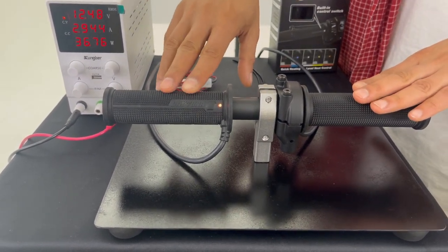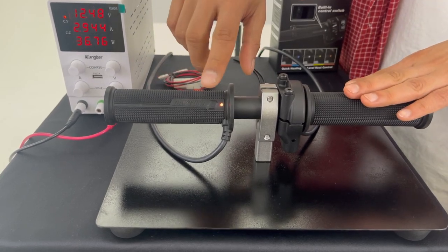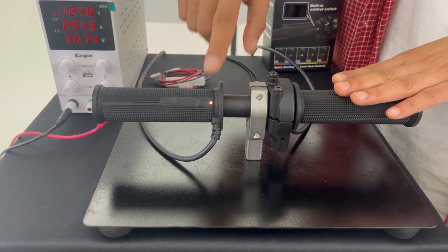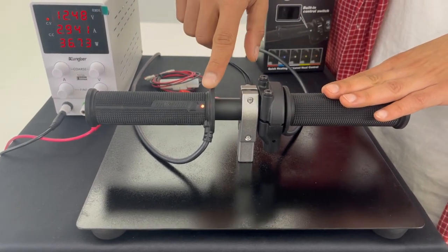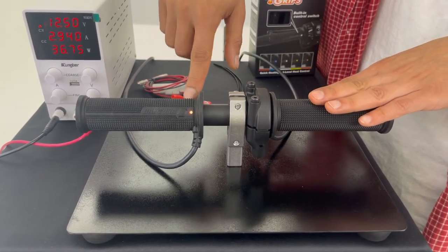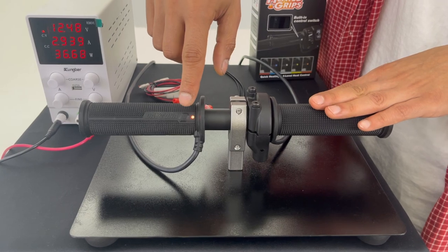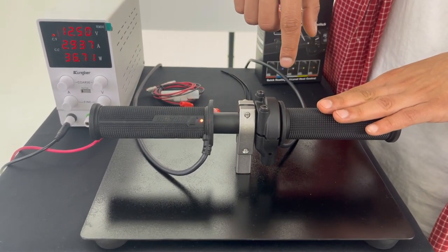And these grips also have a memory function as well. So they will remember the last level that you used and it will go back to that level. As you remember, before turning these off the level was orange, so it went back to orange again.